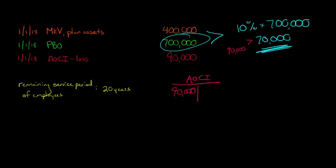By how much? Well, if we subtract them, we see it's greater by $20,000. So we can say that by $20,000, we've exceeded the corridor.